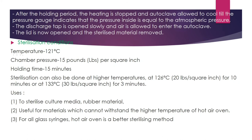After the holding period, heating is stopped and the autoclave is allowed to cool until the pressure gauge indicates pressure equal to atmospheric pressure. The discharge tap is opened slowly, air is allowed to enter, the lid is opened, and the sterilized material is removed. Sterilization conditions: temperature 121°C, chamber pressure 15 psi, holding time 15 minutes.